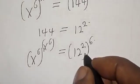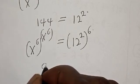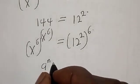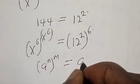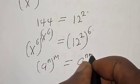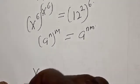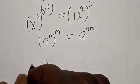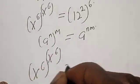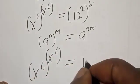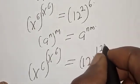Also for the right-hand side, remember that a raised to the power of n raised to the power of m is the same thing as a raised to the power of n times m. So s raised to the power of s raised to the power of 6 is equal to 12 raised to the power of 12.